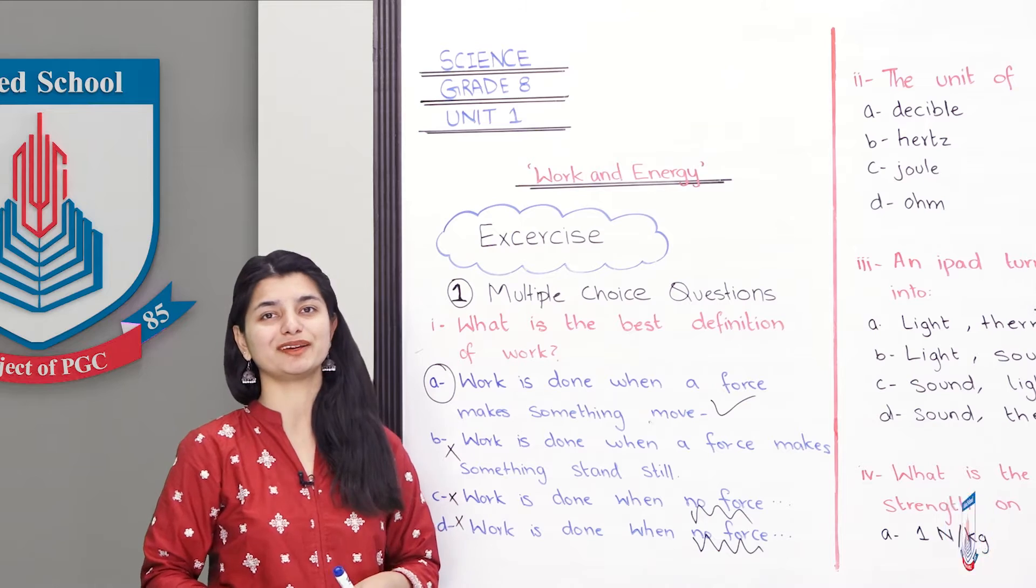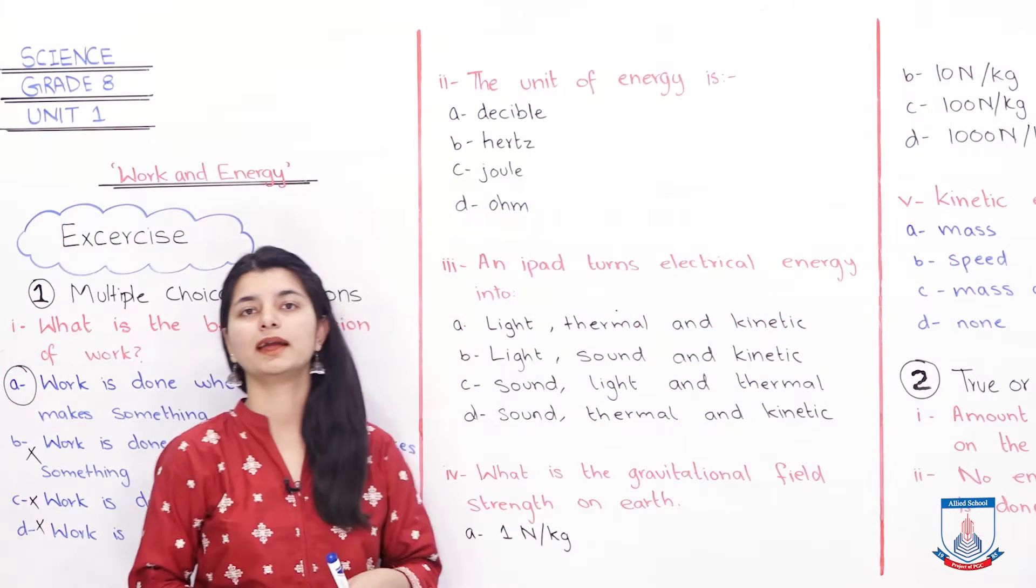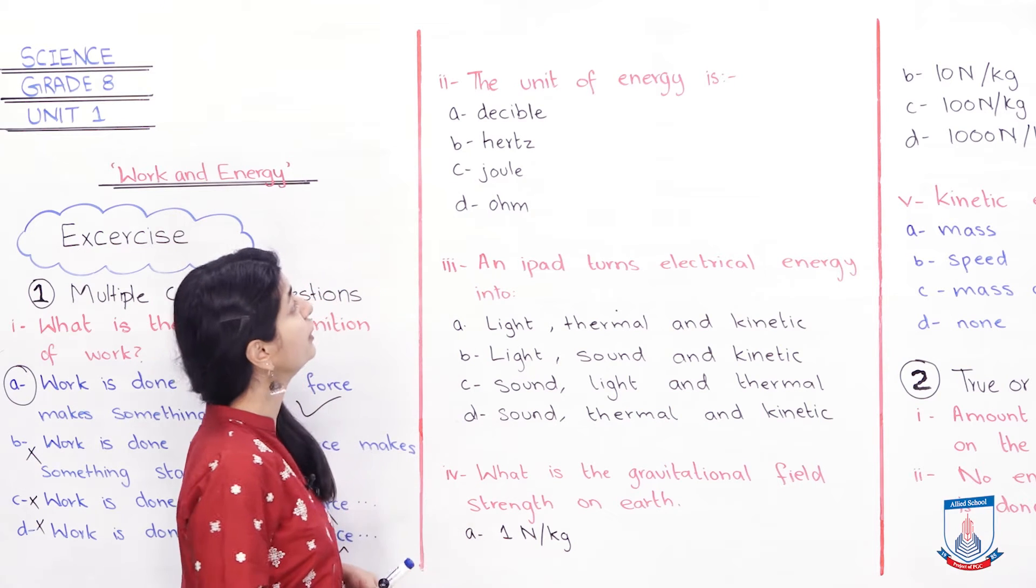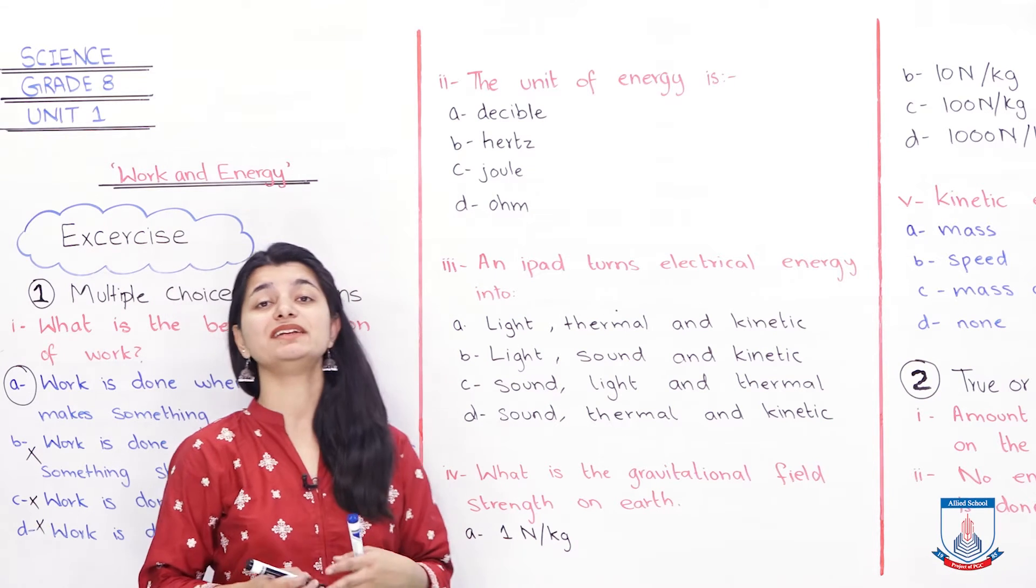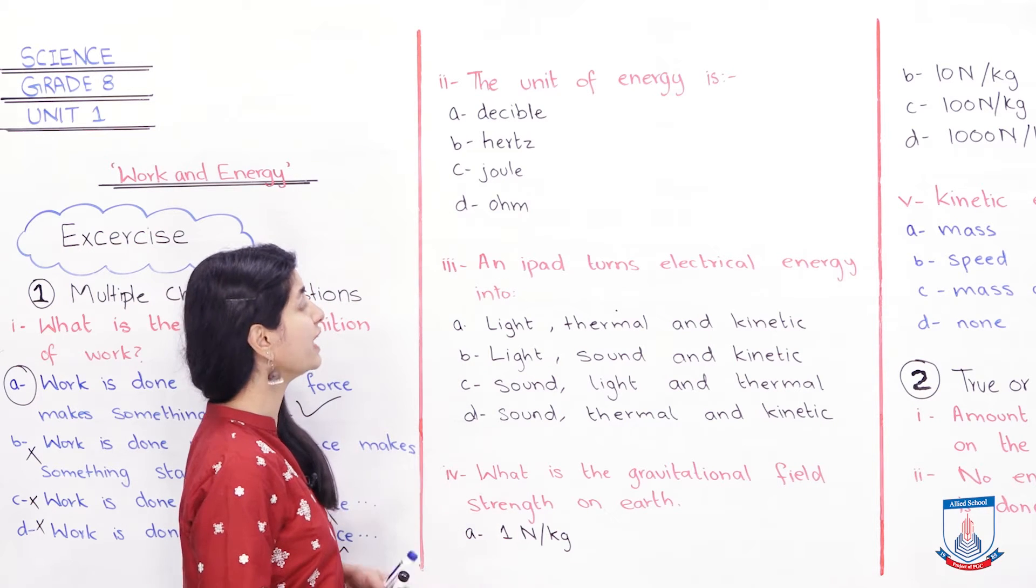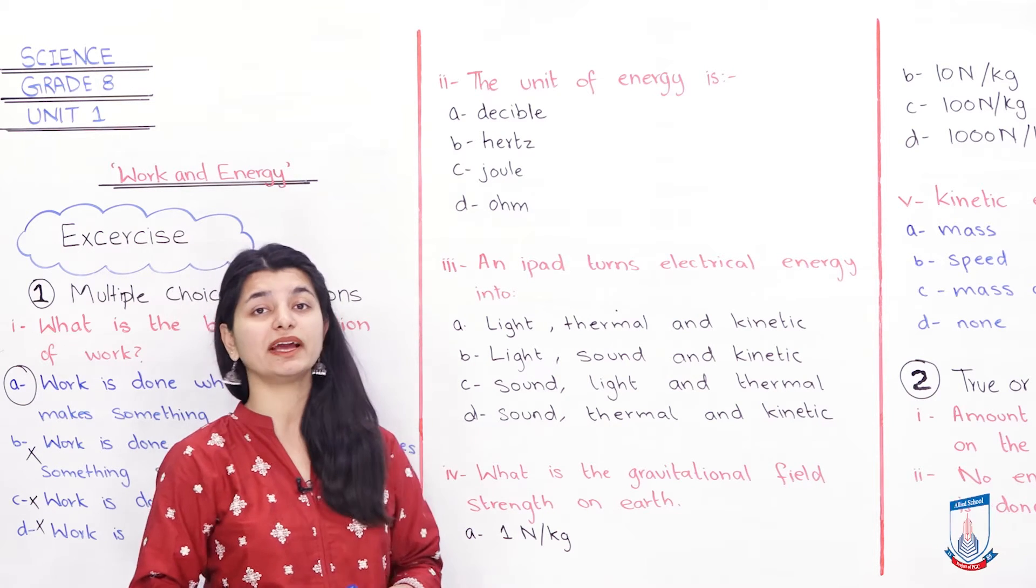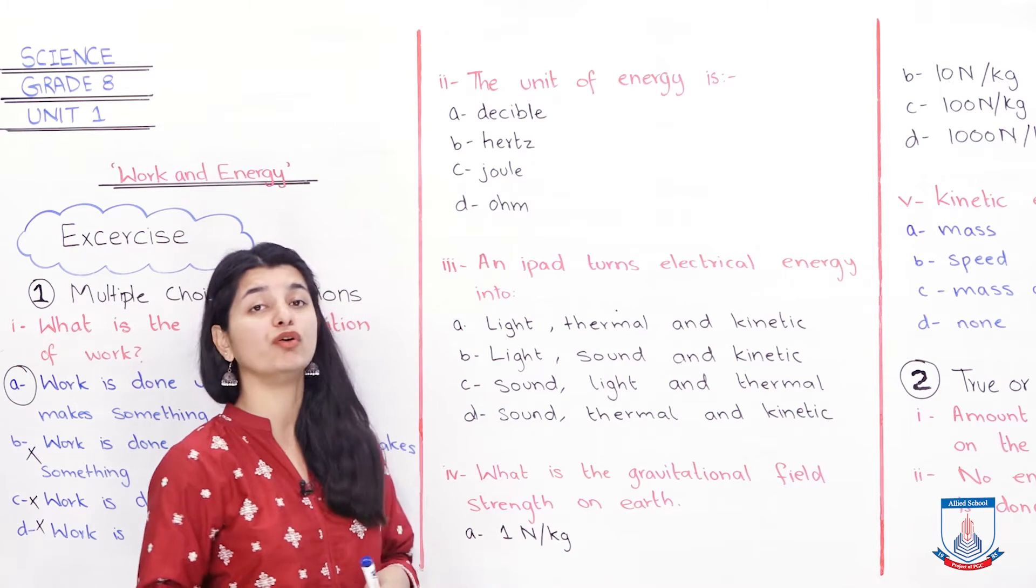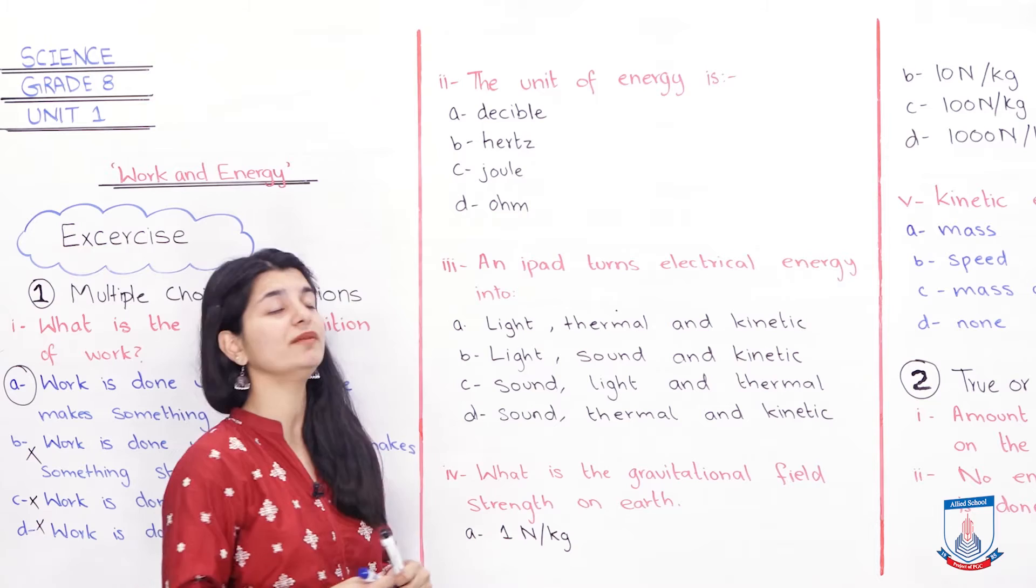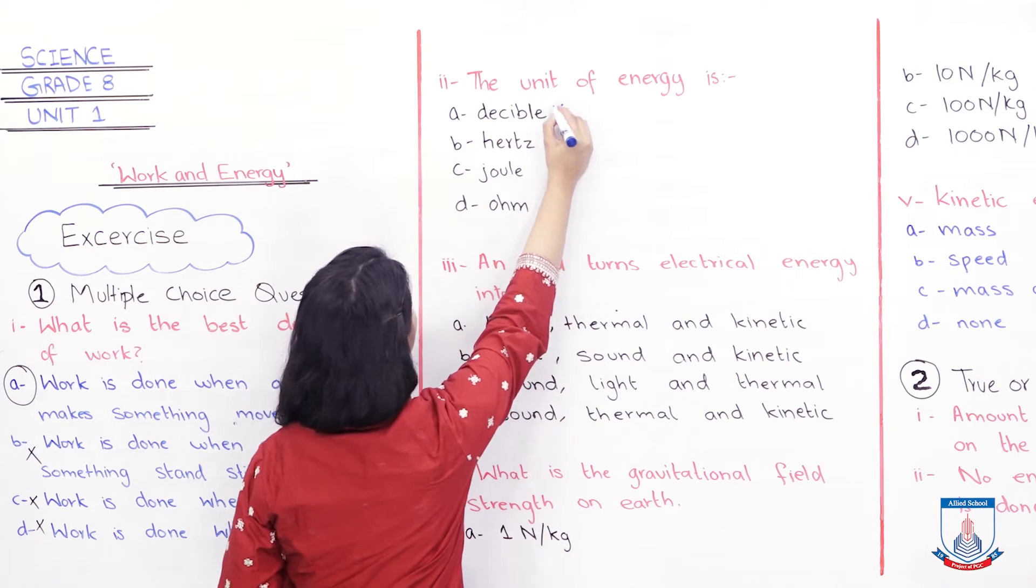Let's see another MCQ. MCQ number 2: the unit of energy is. Again, it's quite simple and straightforward. So what are units called of energy? Is it Newton meter, joule, decibel, or hertz? Now if you have written them, decibel is the unit of sound. Hertz is the unit of frequency.